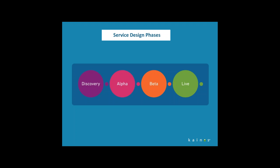Kainos uses a phased agile approach to service design, which closely follows the GDS pipeline, moving through a discovery phase to an alpha where we iteratively refine a prototype, through to a beta phase where we build out a solution that can meet the demands of a live environment. Everything we're going to talk about was achieved over an eight-week period of an alpha, with four developers working on site as an embedded team in the Surrey County Council office.